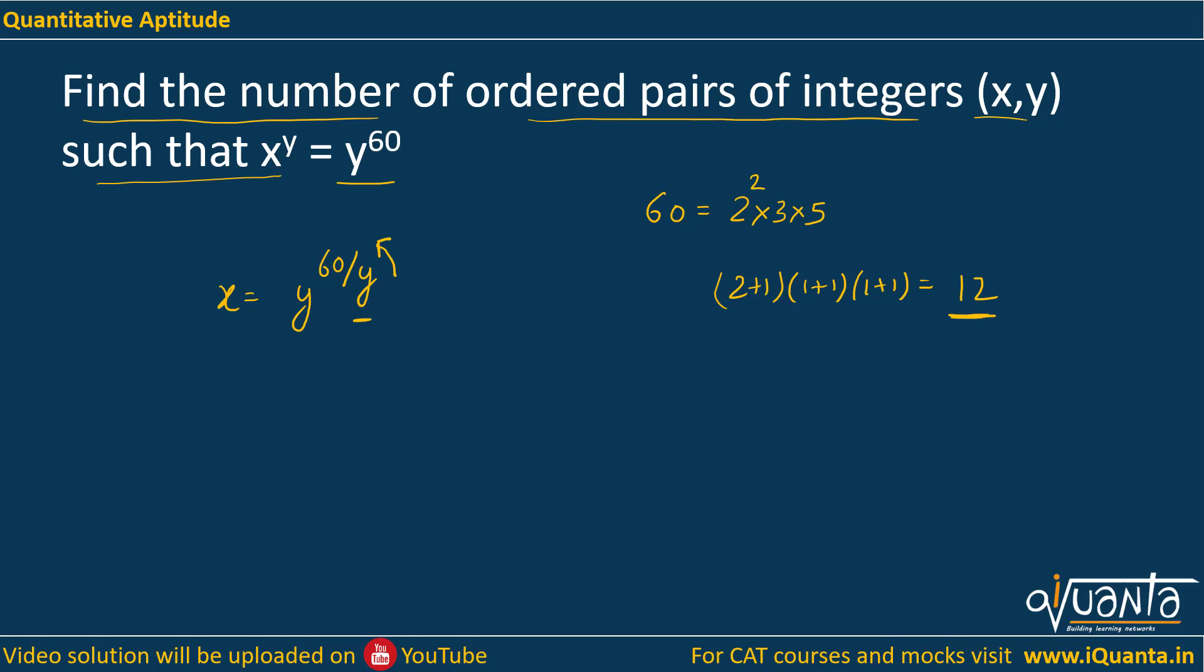But now there will be some values of y for which the power will be a fraction. 60 upon y will be a fraction. So how can we turn this fraction into a whole number or an integer? It can only happen if the y that is in the base is providing something to the power above or a multiplying factor to the power above. If y is a perfect square then that can happen, or a perfect cube, or a perfect fourth power, or a perfect fifth power, sixth power, and so on.